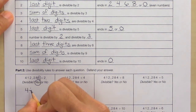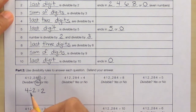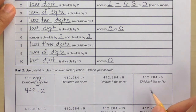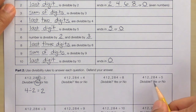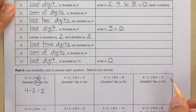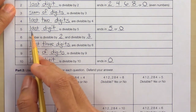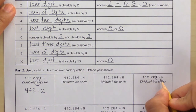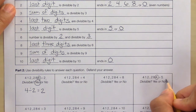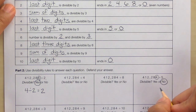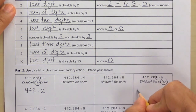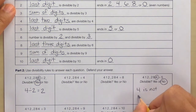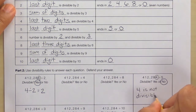We can see that 4 divided by 2 equals 2, so 4 is divisible by 2. Next example: 412,284 divided by 5 — is it divisible, yes or no? The divisibility rule for 5 is: check if the last digit ends in 5 or 0. The last digit is 4 — is 4 divisible by 5? No, so the whole number is not divisible by 5.